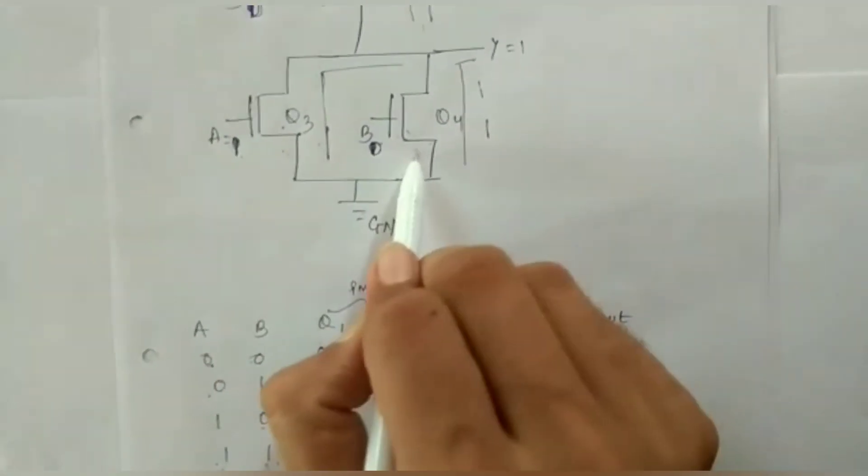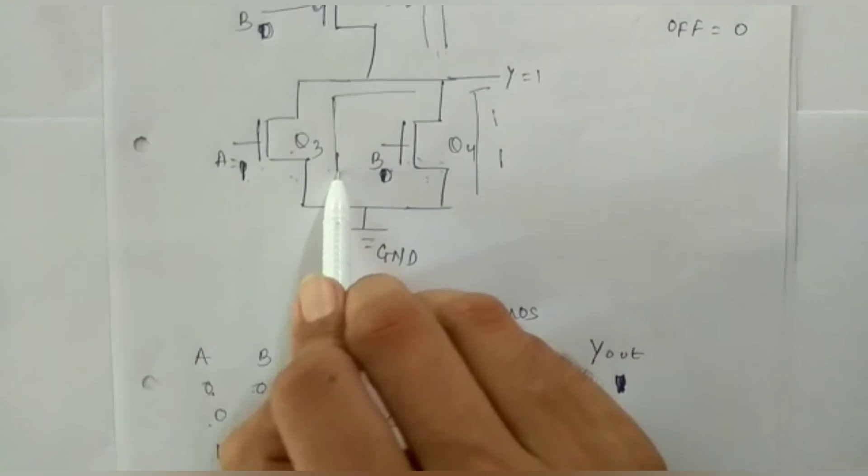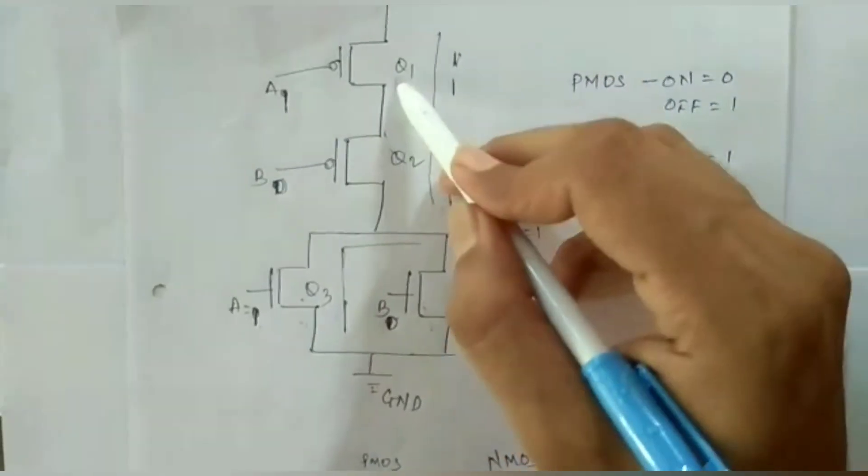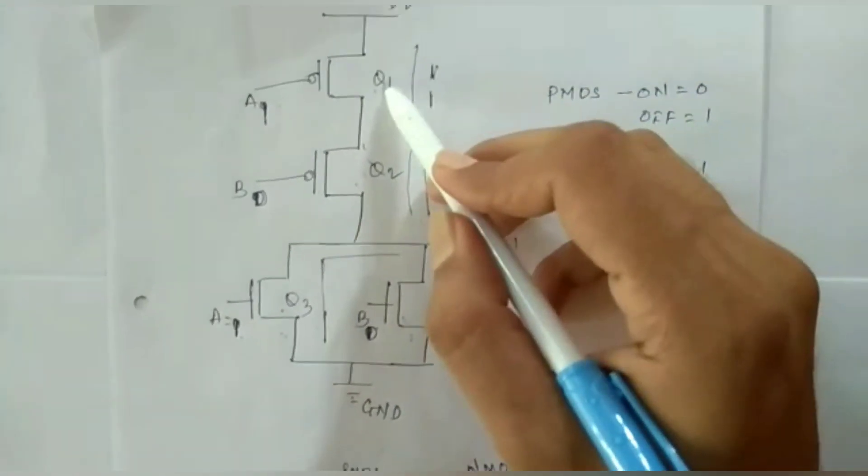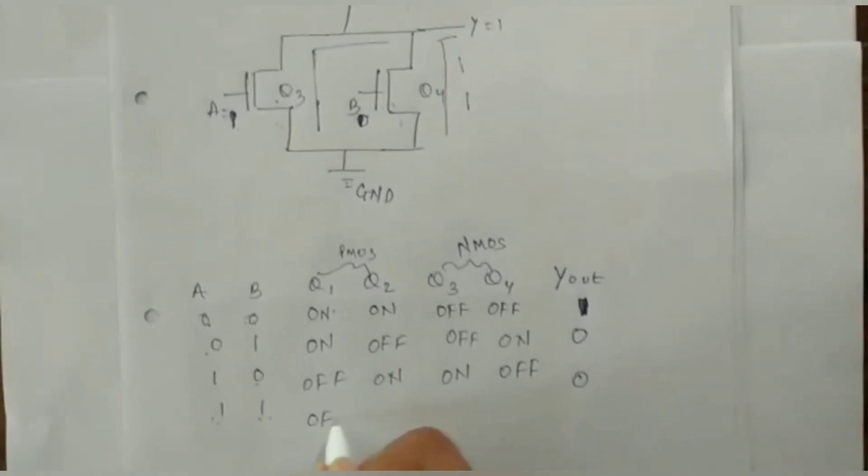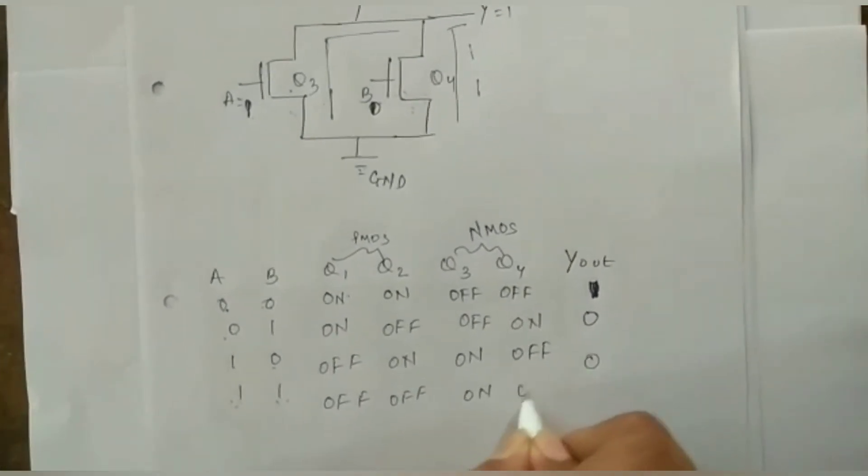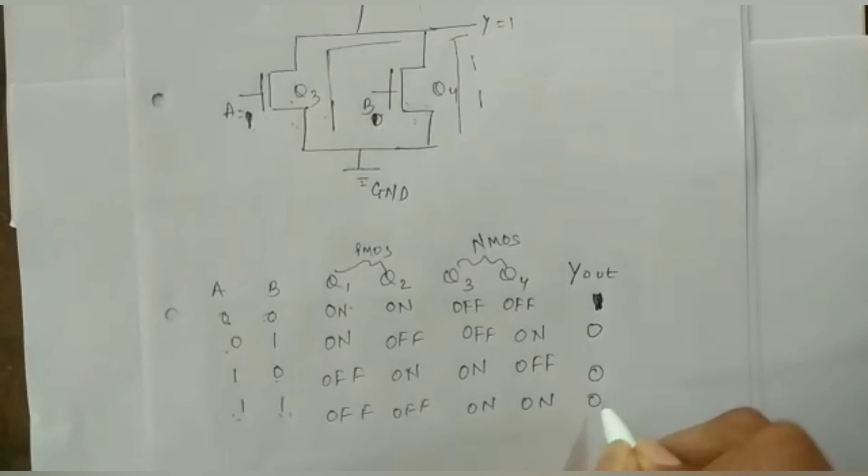For 1, 1, both the NMOS will be CLOSE CIRCUITED and this will be directly connected to GND, whereas both the PMOS will be OFF, that is OPEN CIRCUITED. This will be OFF, this will be ON, and the output is going to be 0.